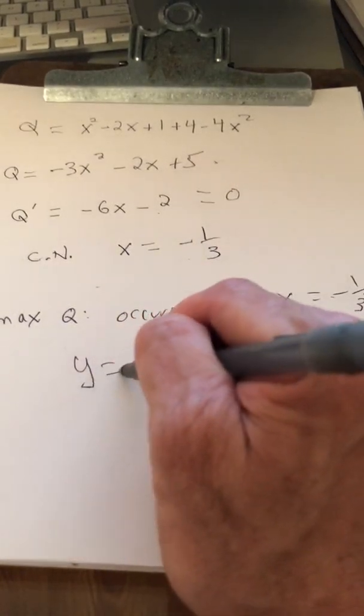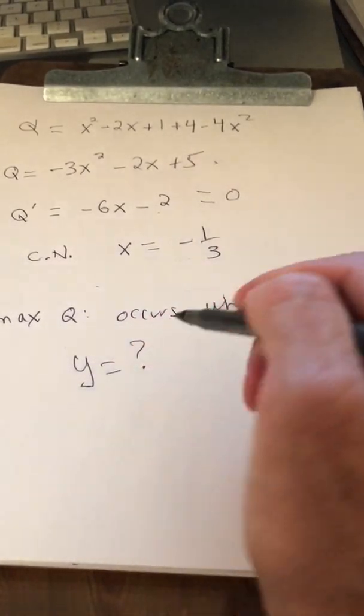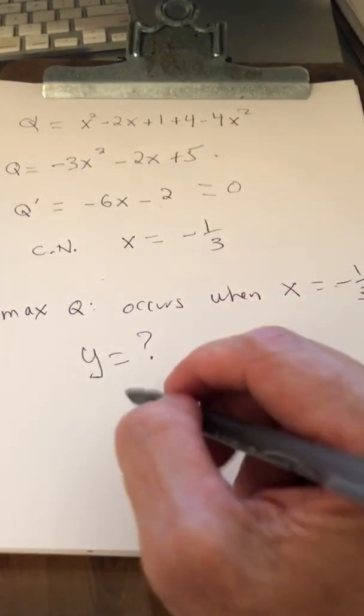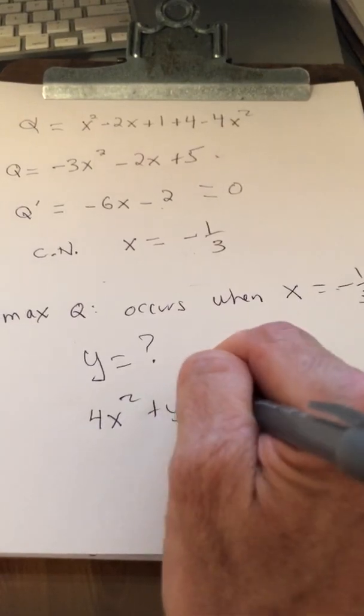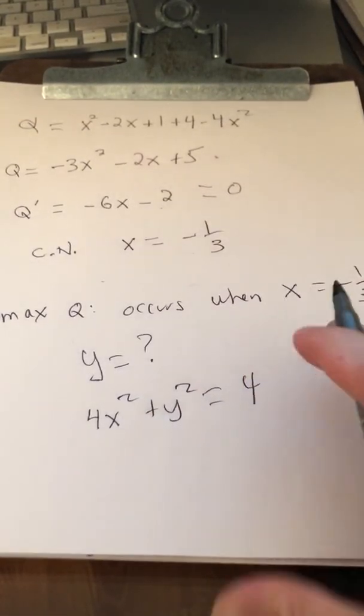So what we're asking right now is what is y? Well, remember that 4x squared plus y squared equals 4. That's the equation of the ellipse.